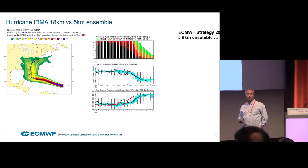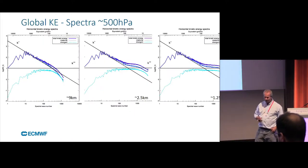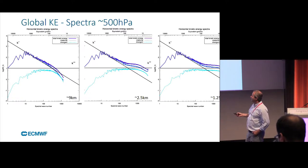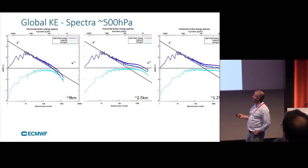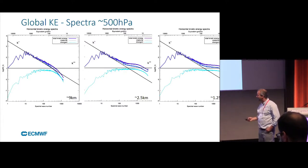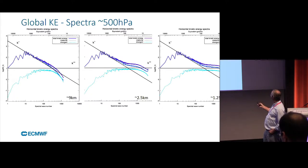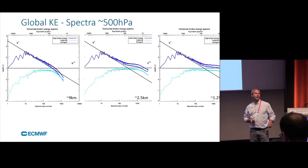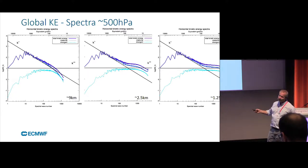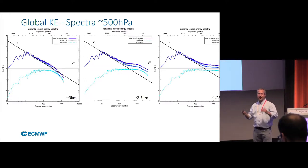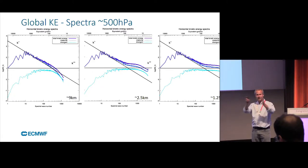Our strategy is to move to an ensemble at roughly 5 km resolution in 2025. Looking at 9 km resolution, these are spectra at 500 hPa of kinetic energy showing divergent and rotational components. As you go to 2.5 and then 1.25 km resolution, you reach something like a transition from a minus-3 to a minus-5/3 slope, predicted from theoretical studies. In our current operational forecast you do not actually see this — we are not yet simulating the correct energy transitions from large scale to mesoscale. The paradigm emerges: resolve rather than parameterize the crucial vertical transport of momentum and heat.